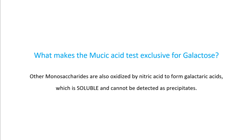Besides galactose, other monosaccharides are also oxidized by nitric acid to form aldaric acids. However, unlike the aldaric acid formed by galactose which is insoluble, the acids formed by other monosaccharides are soluble and cannot be detected as precipitates. This makes the mucic acid test a specific test to distinguish the presence of galactose from other monosaccharide sugars.